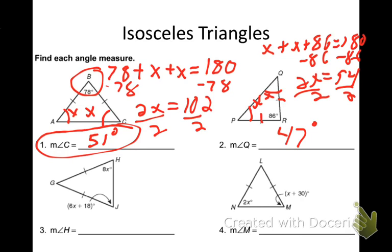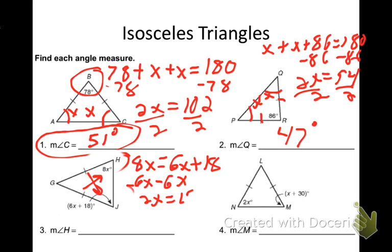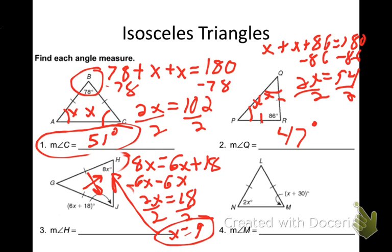Number 3: I'm given two angles expressed as variables — H is 8x and J is 6x + 18. I don't have a third angle, but since they are both opposite the congruent sides of the isosceles triangle, I can set them equal: 8x = 6x + 18. Subtracting 6x gives 2x = 18, so x = 9. Substituting back: 8 times 9 gives an angle of 72 degrees.